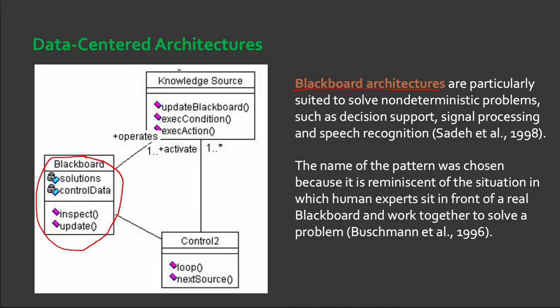In Blackboard architectures, a central Blackboard data structure holds the entire state of the solution. We also have domain and world knowledge — the knowledge source — which is represented in separate independent knowledge sources, or KS, which hold computations that respond to changes in the Blackboard. The Blackboard operates the knowledge source; the KS holds the computation that responds to changes in the Blackboard and has direct access to it, and it interacts through the Blackboard to yield solutions.